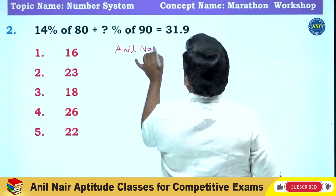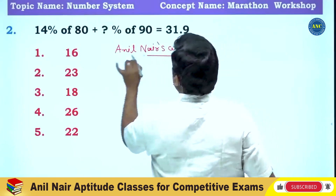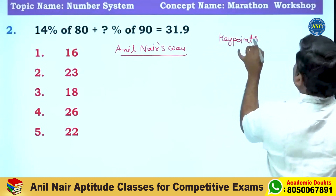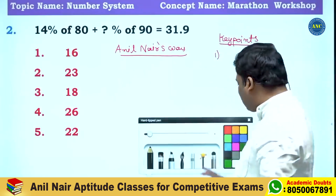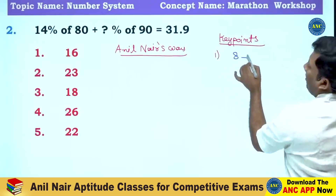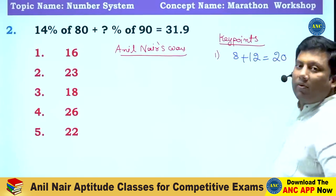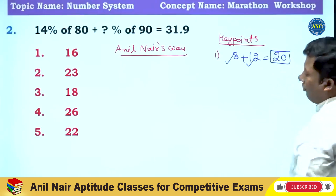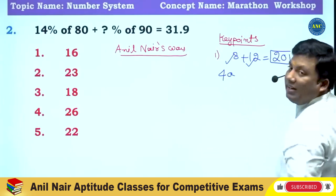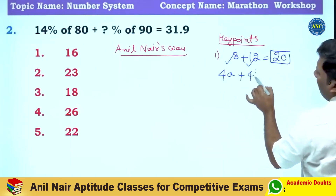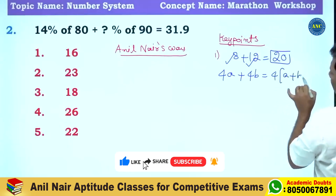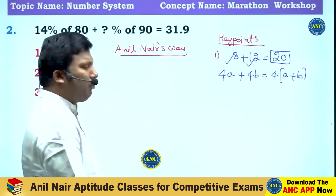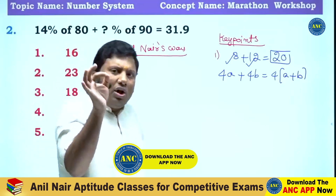Here is one important key point. Listen carefully — these key points are extremely important and will work even if the question changes. 8 plus 12 equals 20; both 8 and 12 are divisible by 4, so the answer should also be divisible by 4. Any number divisible by 4 is 4 into something, so 4 into (a plus b) — if two numbers are divisible by 4, their sum is also divisible by 4.